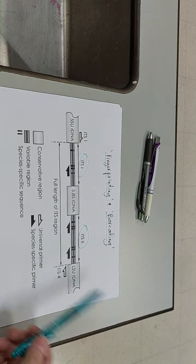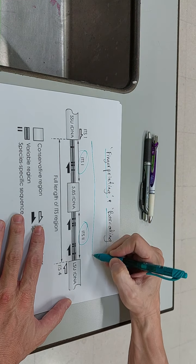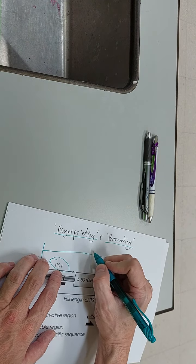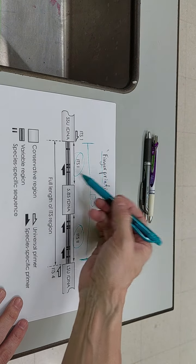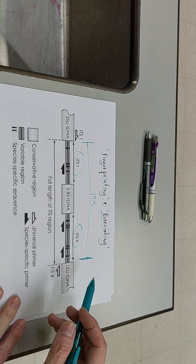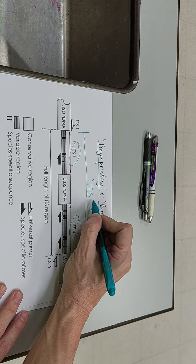ITS, you're familiar with ITS1 and ITS2. We generally refer to the entire ITS region, so this whole region here. If you hear somebody say ITS that's usually what they mean. So what they're actually referring to is ITS1, 5.8s which is part of the ribosomal DNA, and ITS2. If they just say ITS that's what they mean, they mean this whole region.